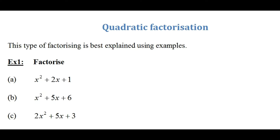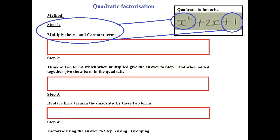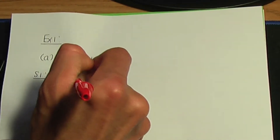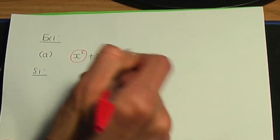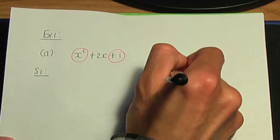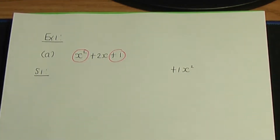Before I factorise this quadratic, let me show you the method. The first step in quadratic factorisation is to multiply the x squared and the constant terms together. So x squared times plus 1 gives plus 1x squared. That is step number 1 done.